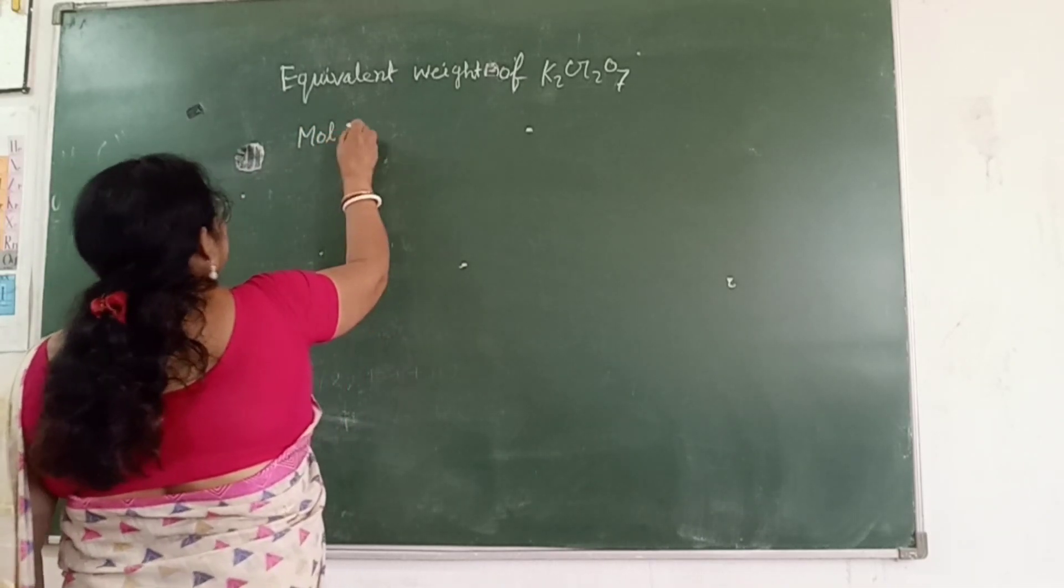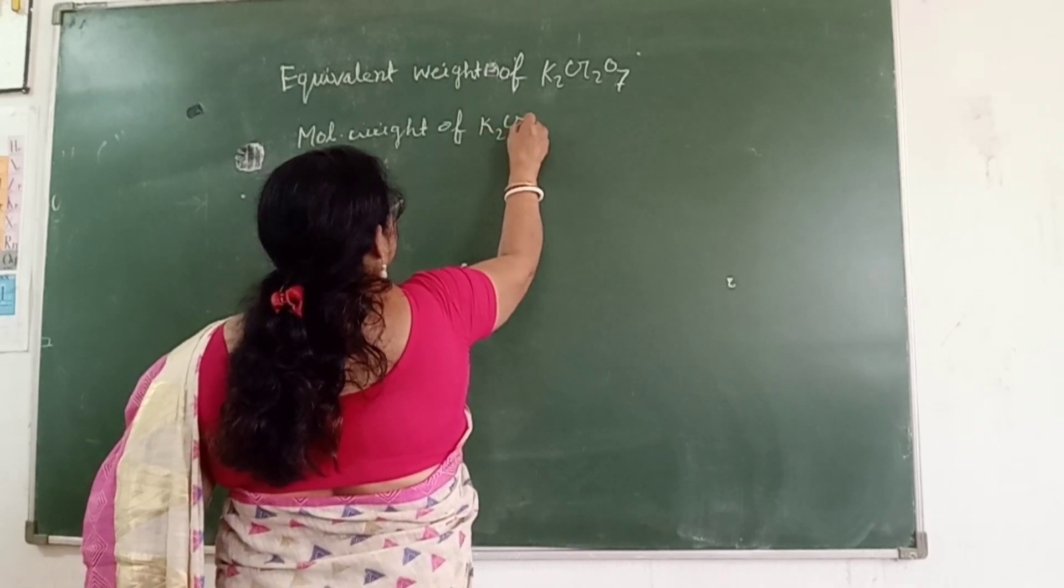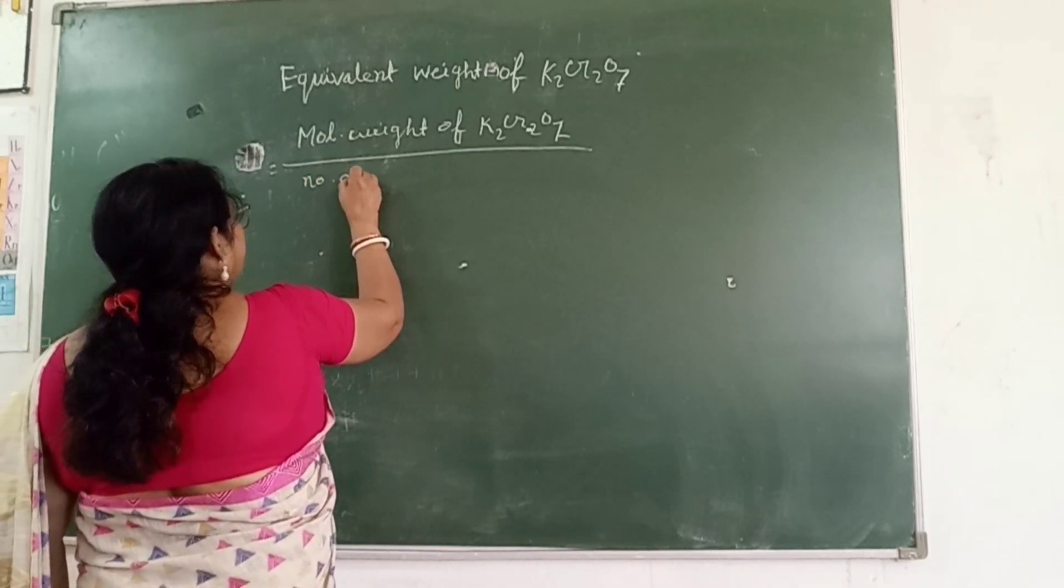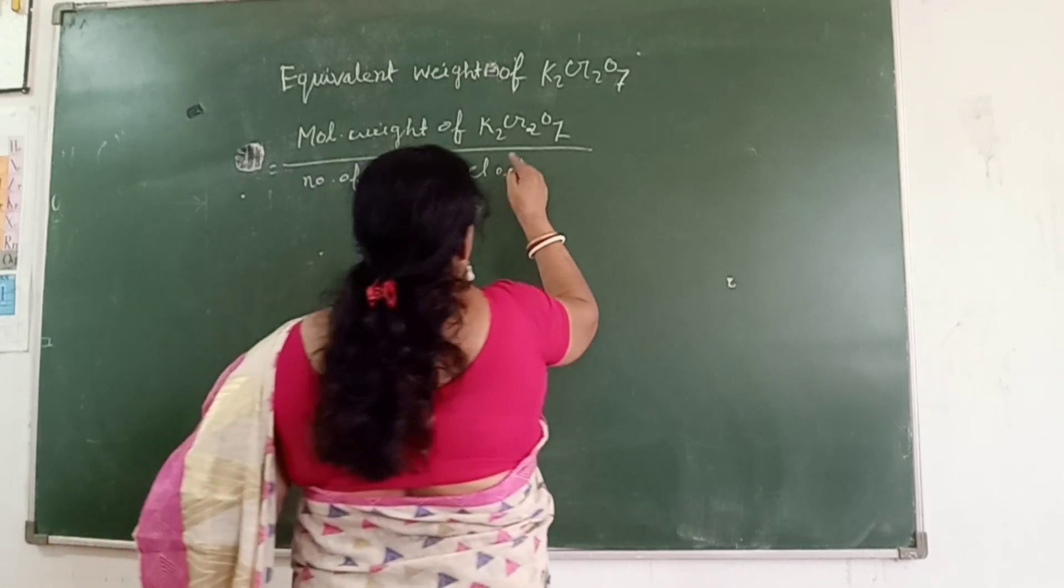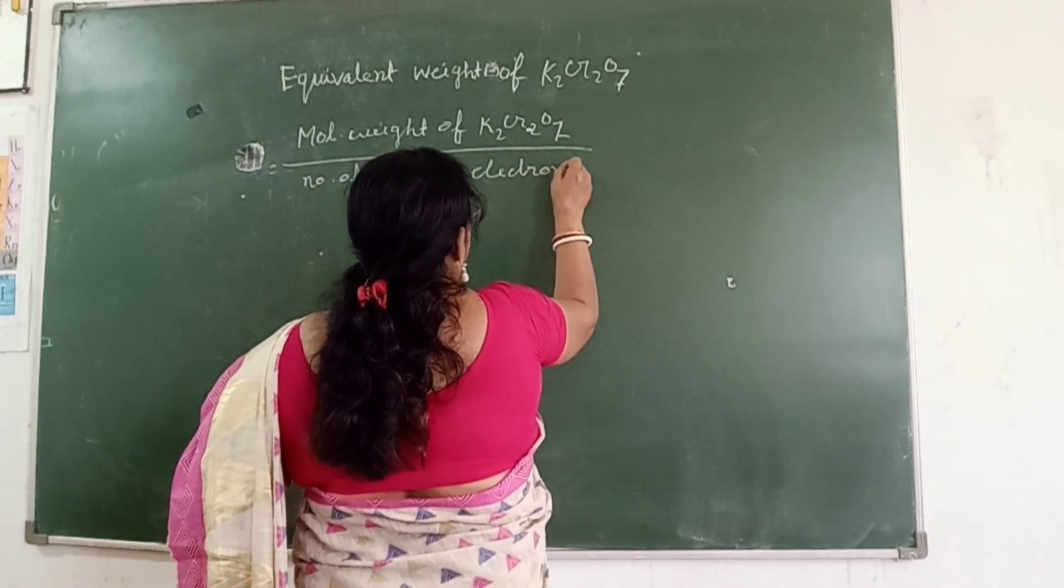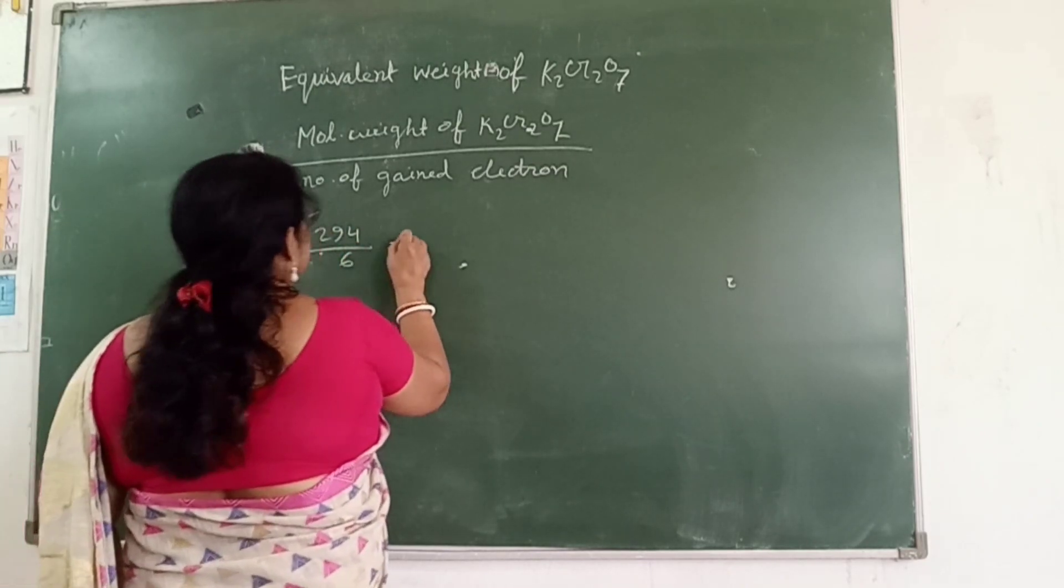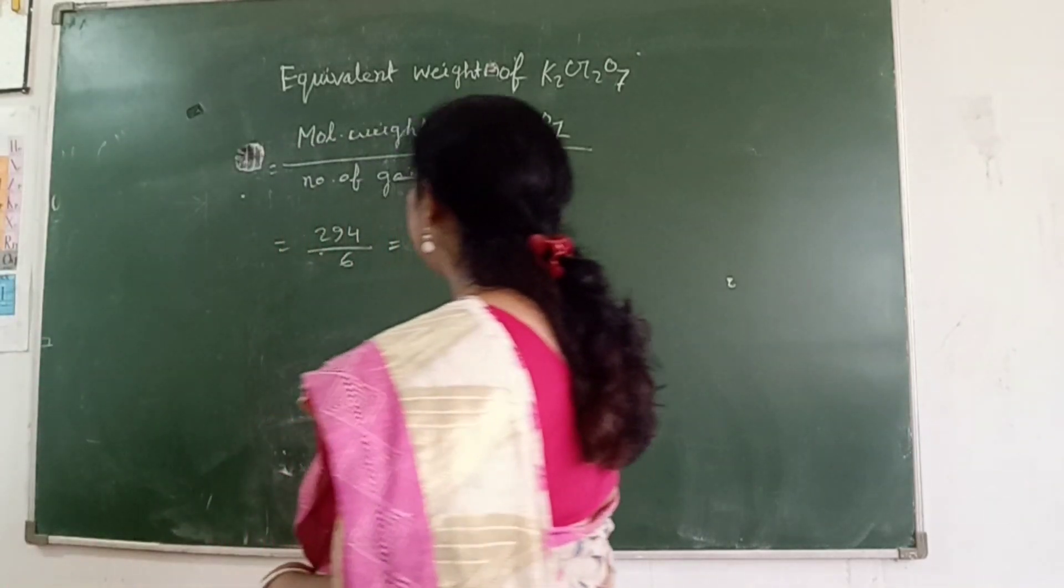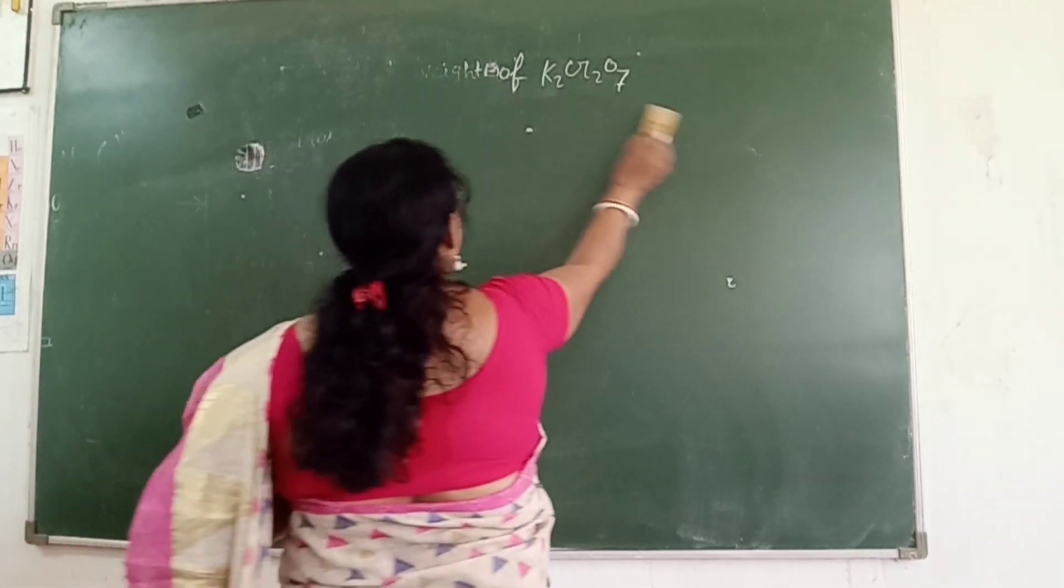Equivalent weight of K2Cr2O7 equals molecular weight divided by number of electrons gained. 294 divided by 6 equals 49 grams.